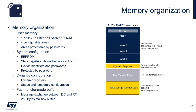Section 3 allows dynamic configuration via volatile registers, facilitating storage of status and temporary configuration. Finally, Section 4 comprises the fast transfer mode buffer where a maximum of 256-byte messages improve data transfer between I2C and RF.